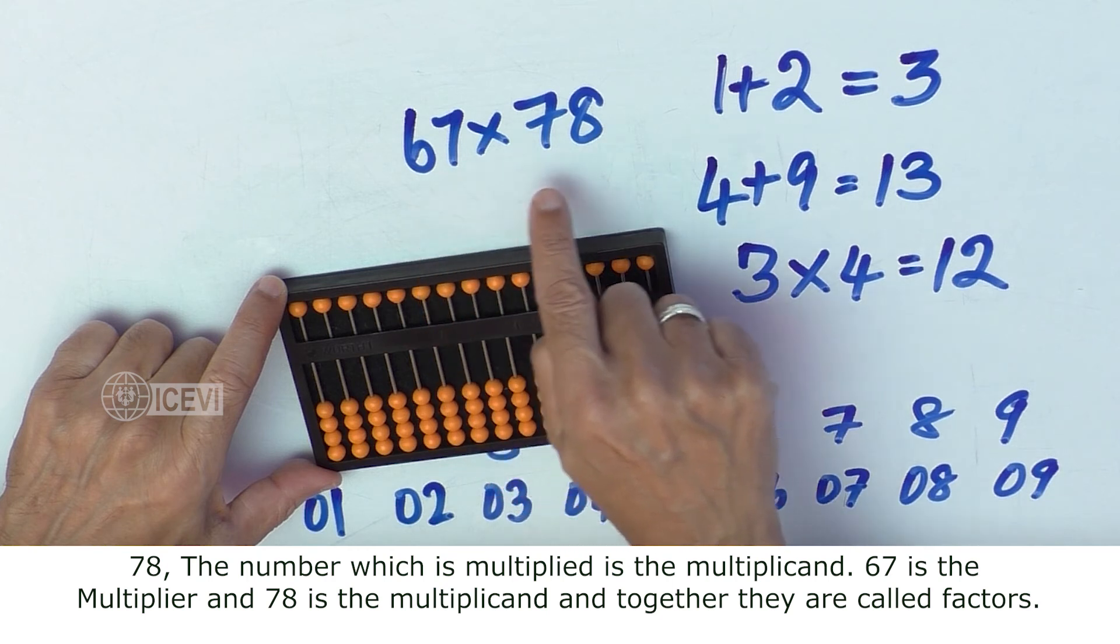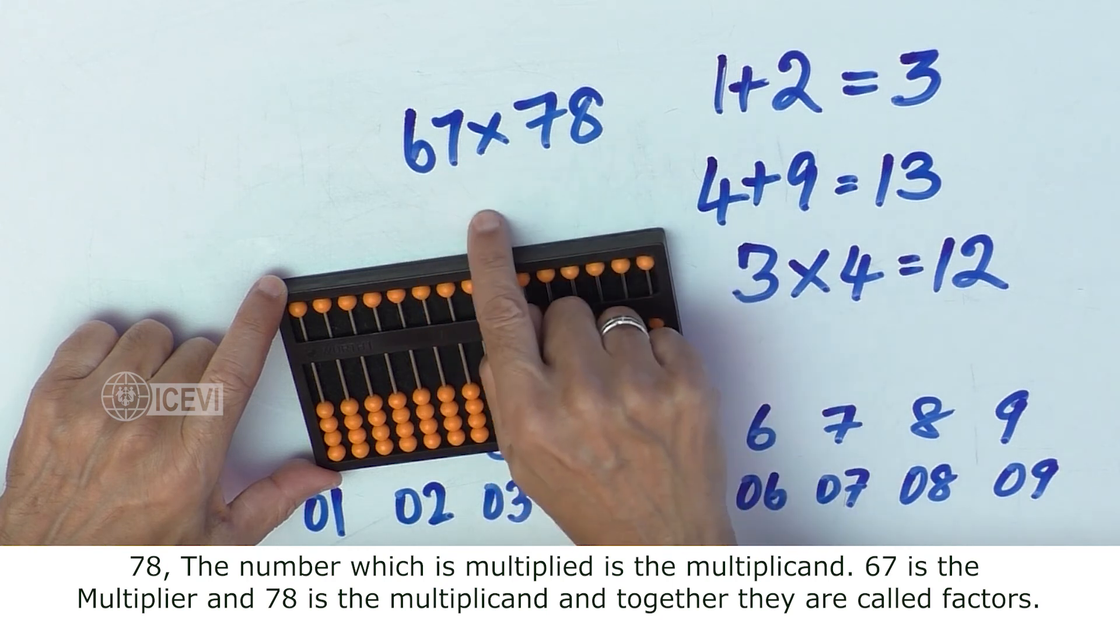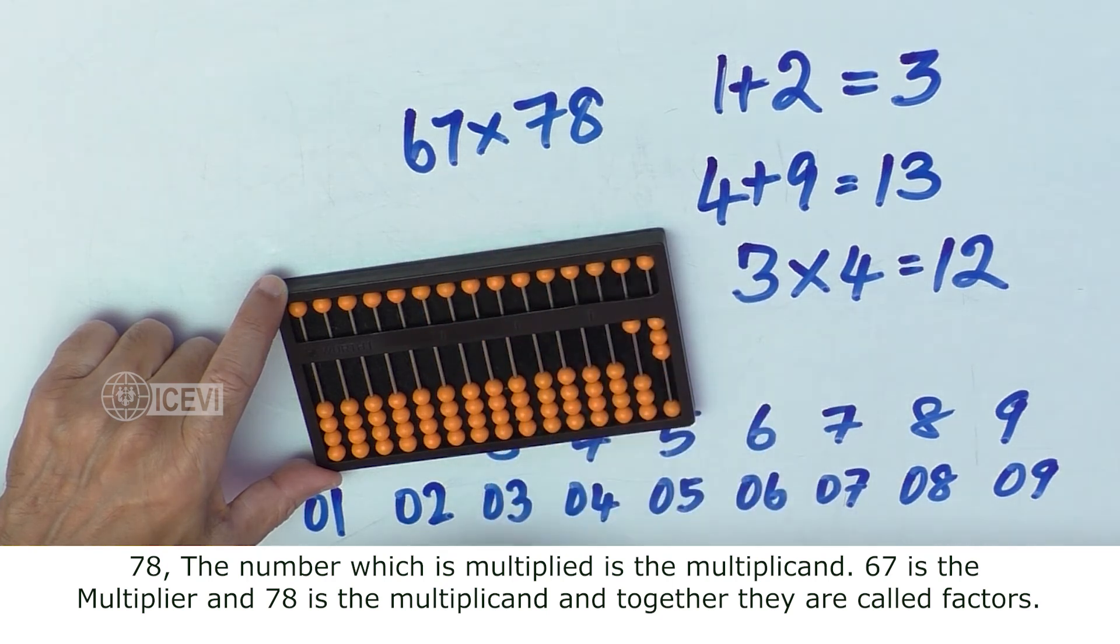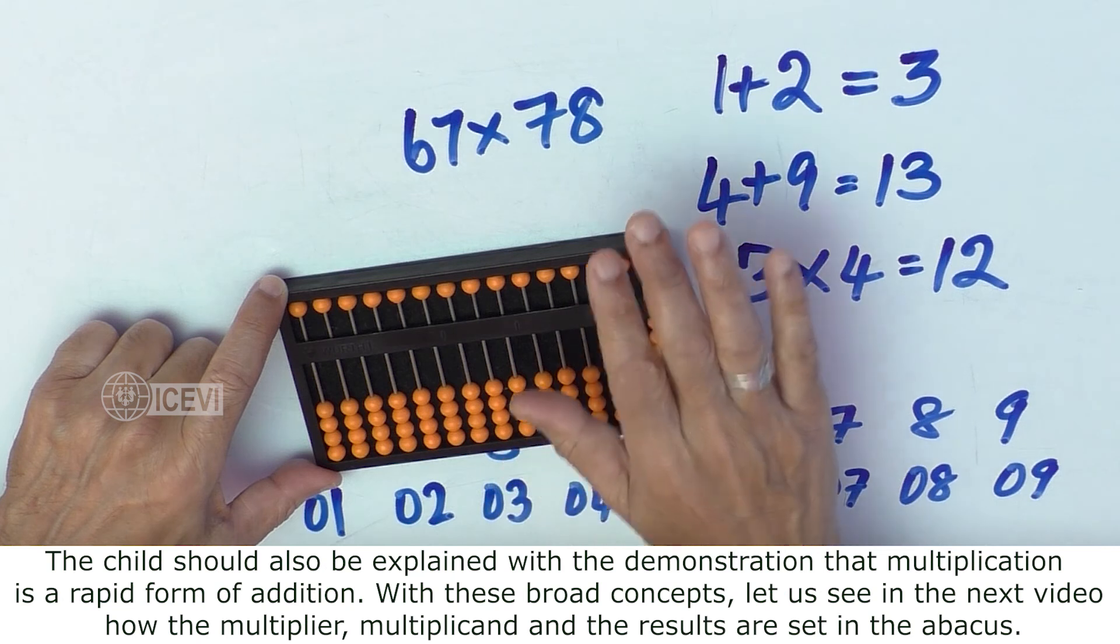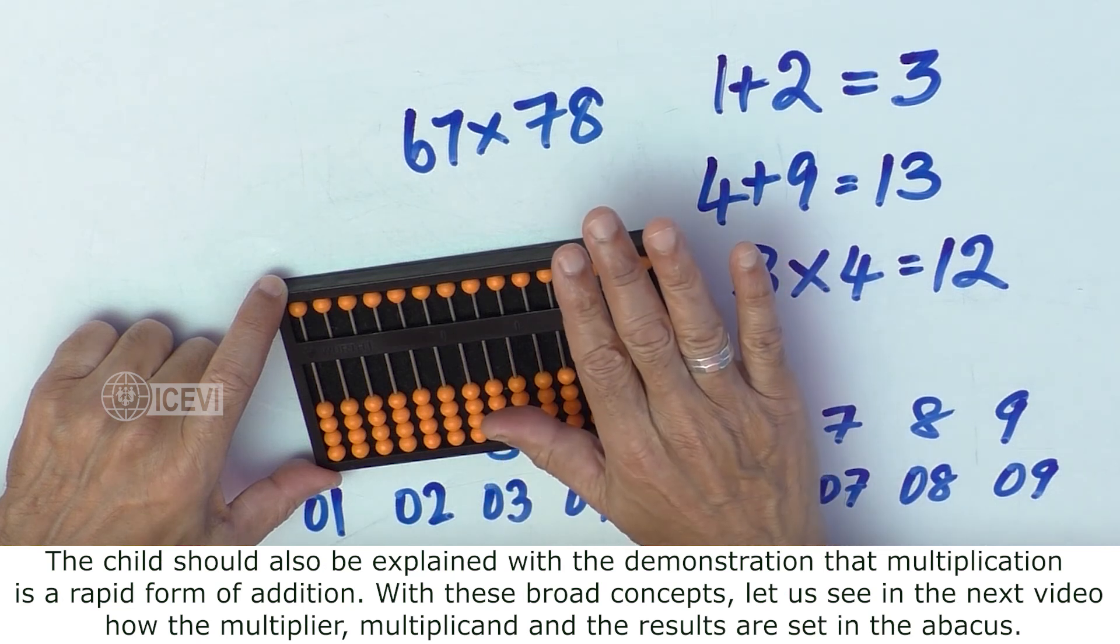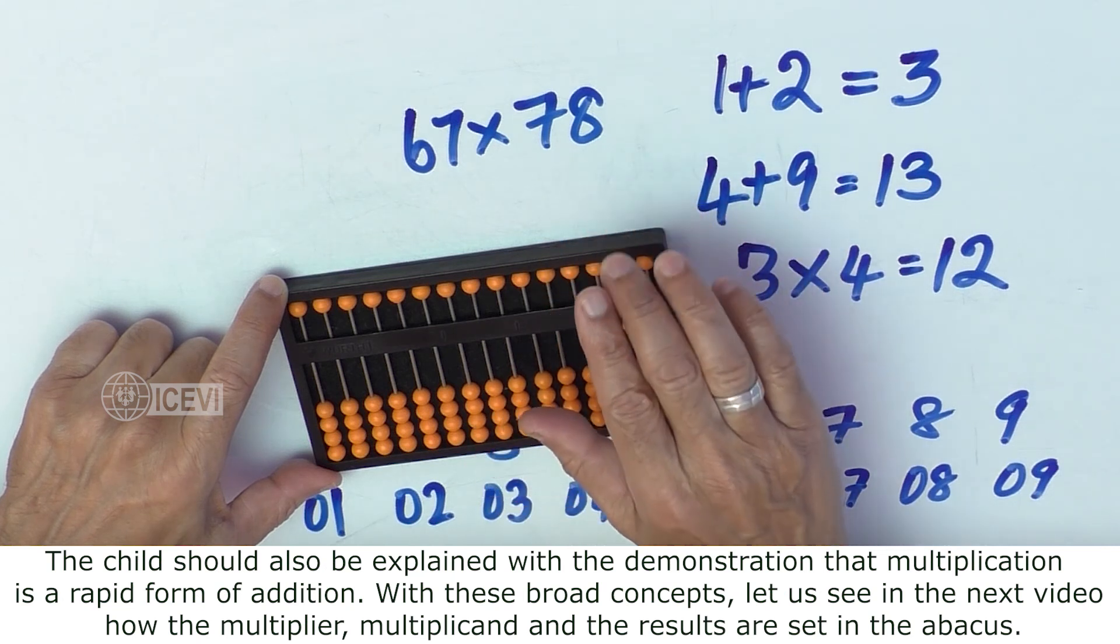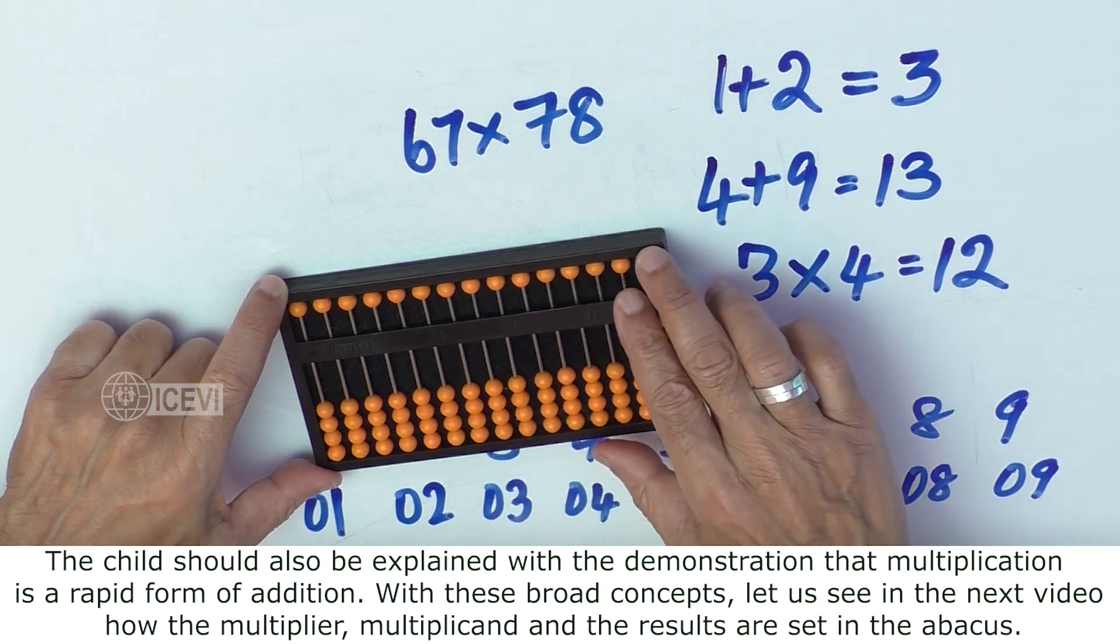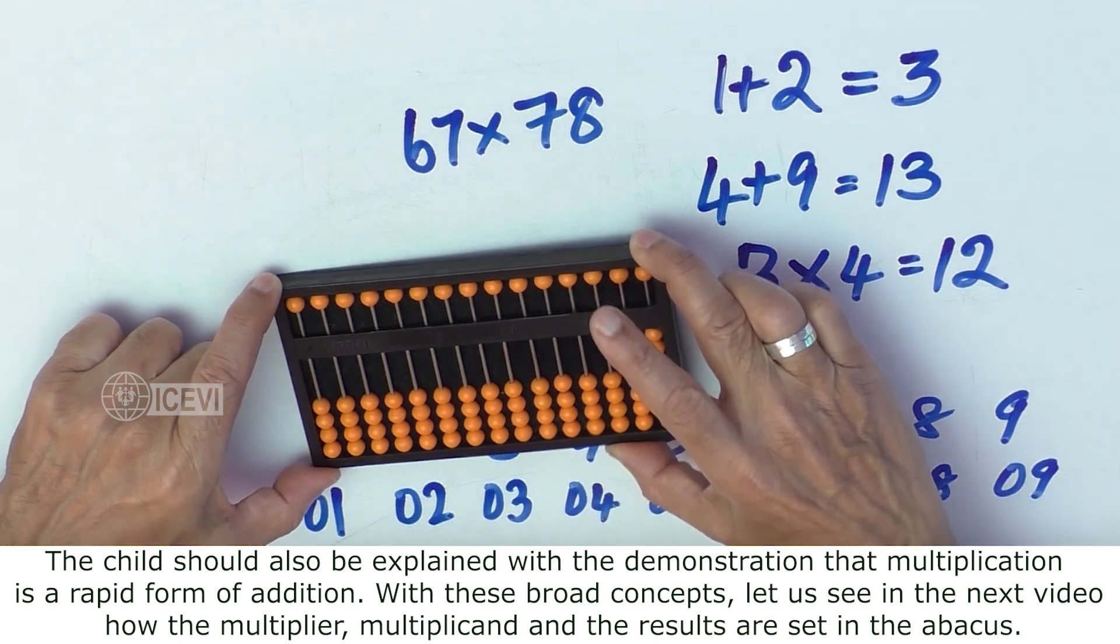Multiplier and Multiplicand together are called Factors. The child should also be explained with demonstration that multiplication is a rapid form of addition.